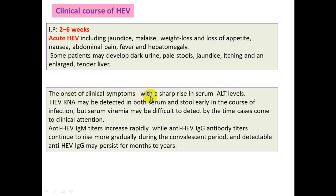The onset of clinical symptoms coincides with a sharp rise in serum ALT levels. In hepatitis E virus infection, ALT rises sharply at onset of illness and continues to fluctuate throughout the illness.